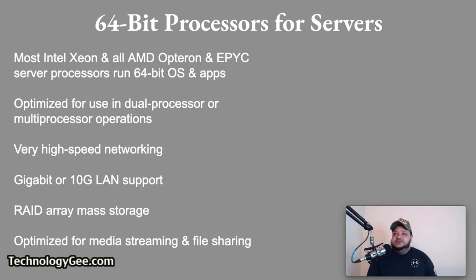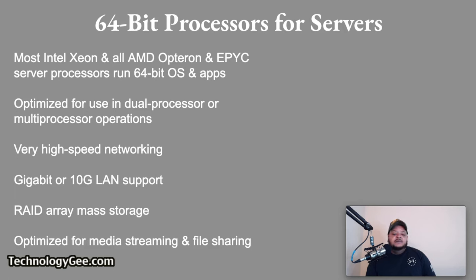For 64-bit server processors, most Intel Xeon and AMD Opteron and EPYC server processors run on 64-bit operating systems and apps. These processors are optimized for dual-processor or multi-processor operations and for very high-speed networking. Gigabit or 10-gigabit LAN support, RAID array mass storage, and optimization for media streaming and file sharing are typical features.